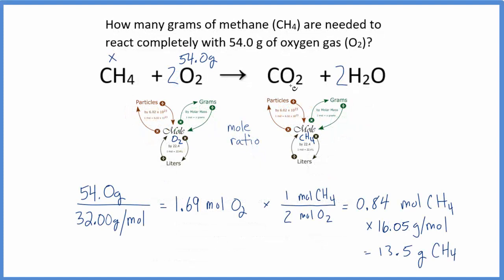So for this one, we already have a balanced equation. I wrote that I have 54 grams of O2, and I'm looking for grams of CH4. So I took my 54.0 grams of O2. I divided by the molar mass of O2. That got me moles of O2, multiplied by my mole ratio to figure out moles of CH4, which I then multiplied by the molar mass of CH4 to get grams. My final answer, 13.5 grams of CH4.